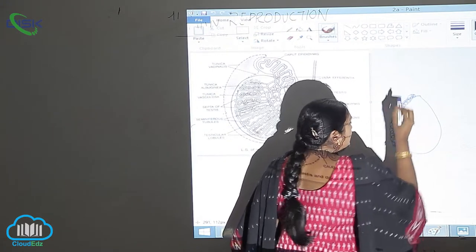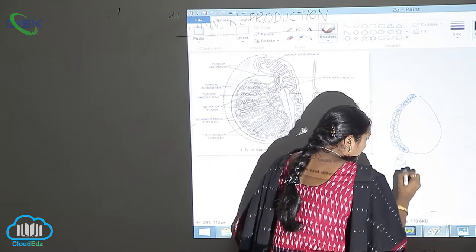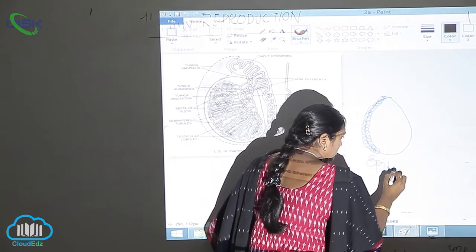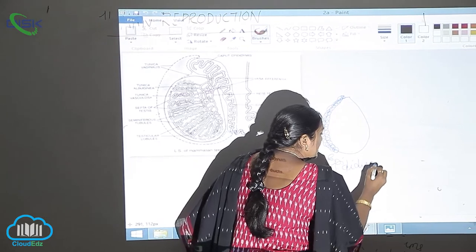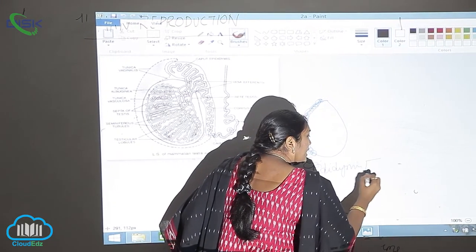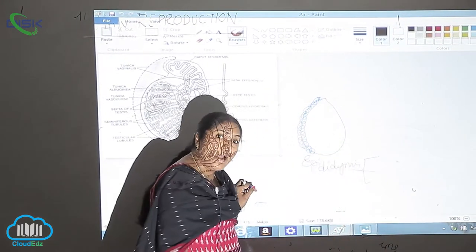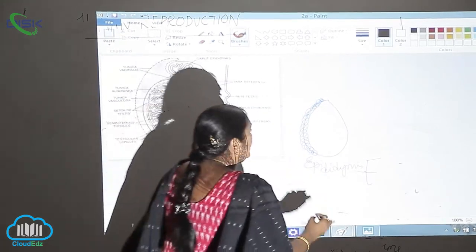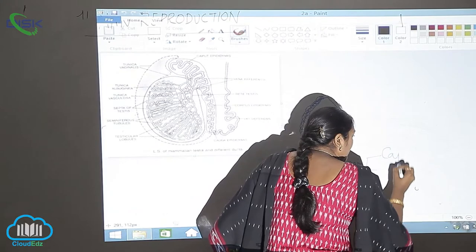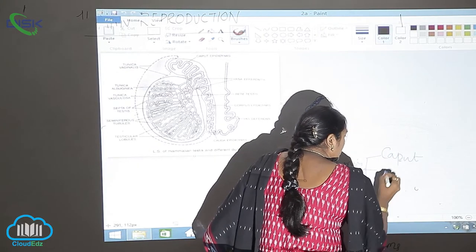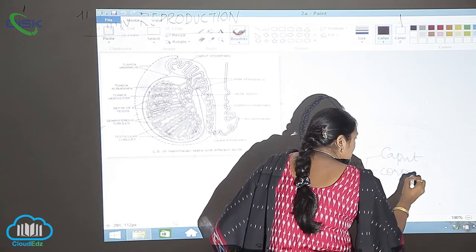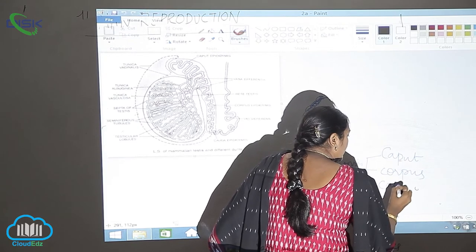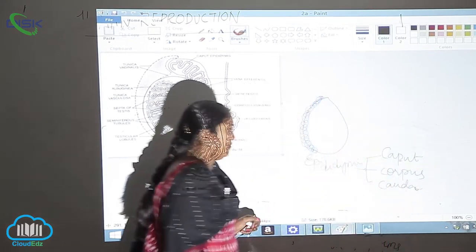This epididymis is categorized into three parts. The first one, already there in the diagram, is the caput epididymis, the corpus epididymis, and the cauda epididymis. Very important.